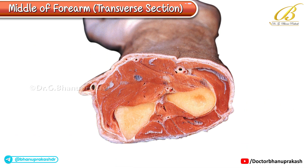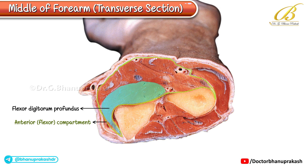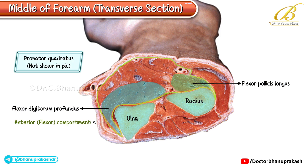In this section, the deep layer of the anterior compartment shows two important muscles. Flexor digitorum profundus, located along the anterior surface of the ulna, and flexor pollicis longus, which lies along the anterior surface of the radius. The pronator quadratus, another deep muscle of the forearm, is not visible here, as it is situated more distally near the wrist.